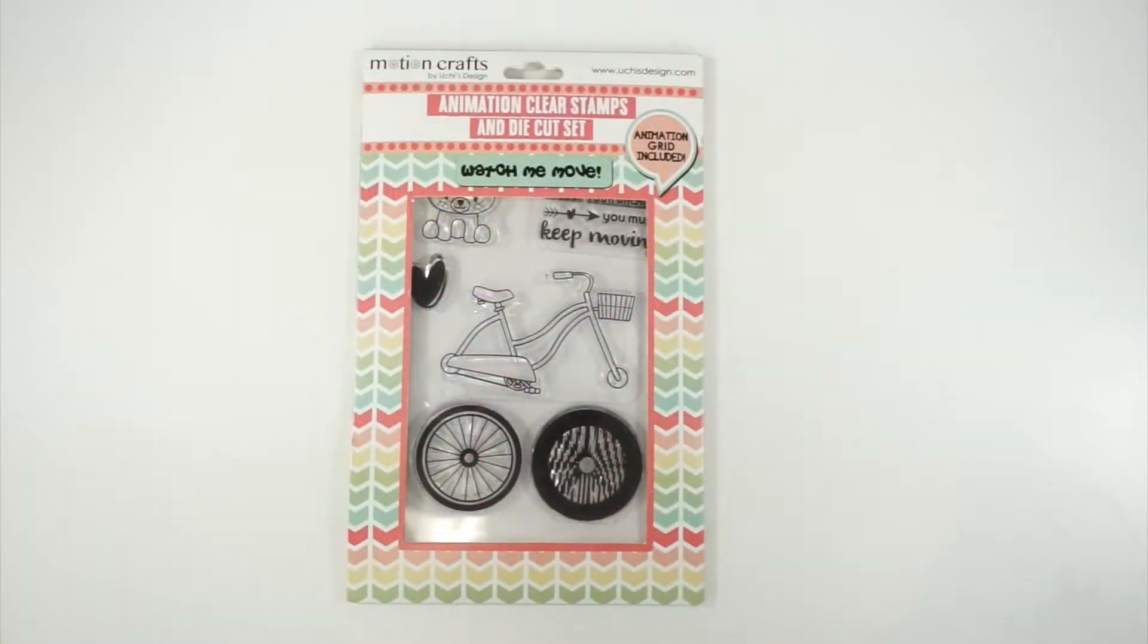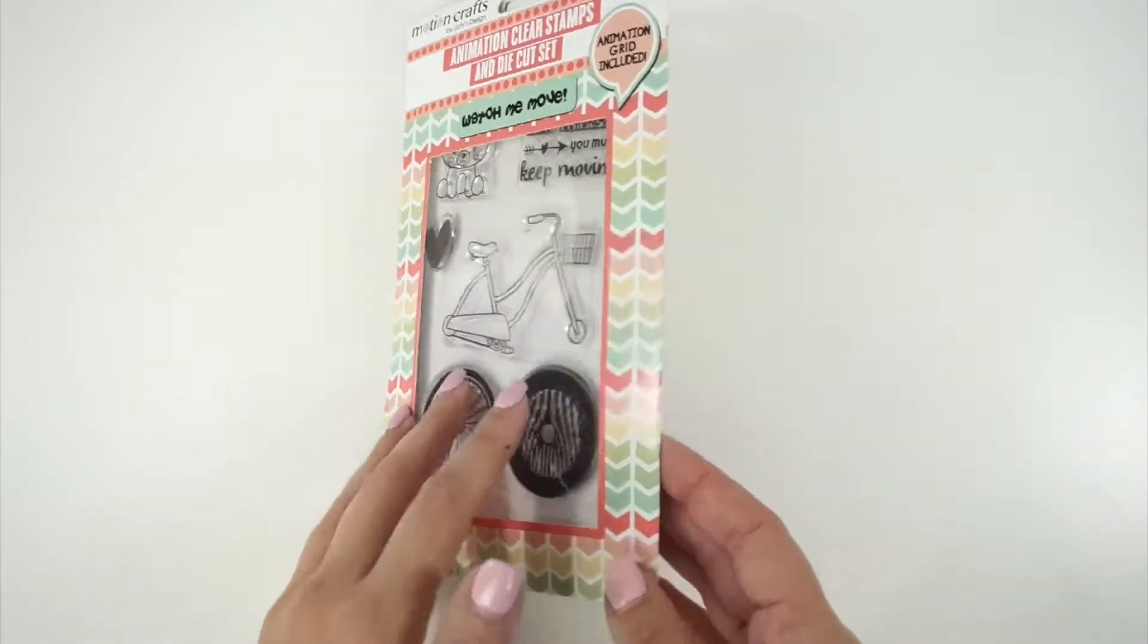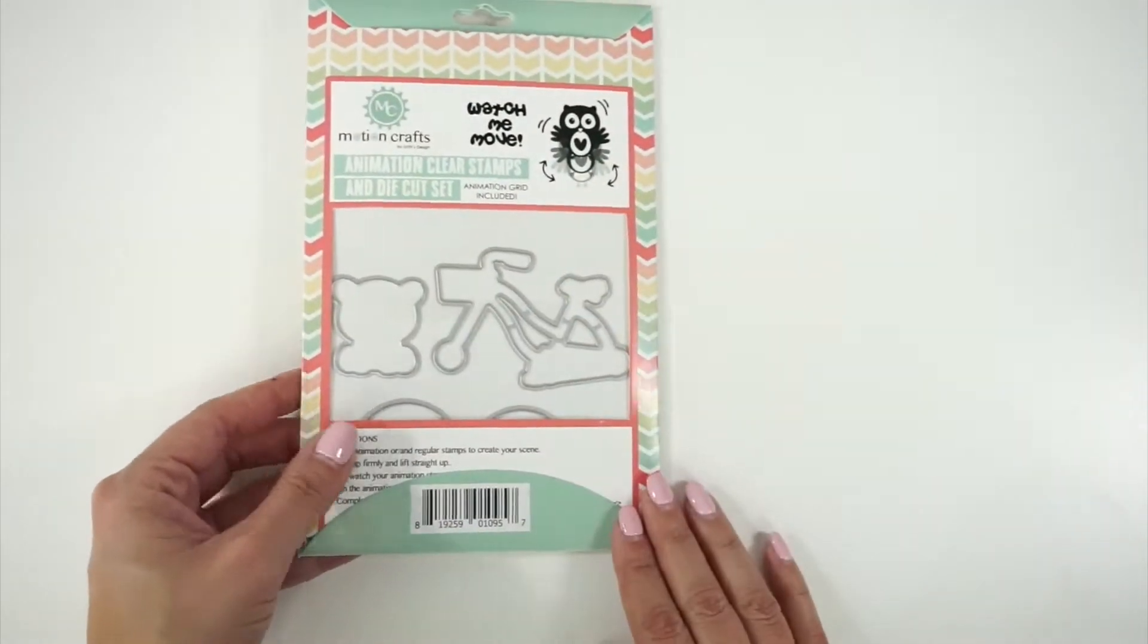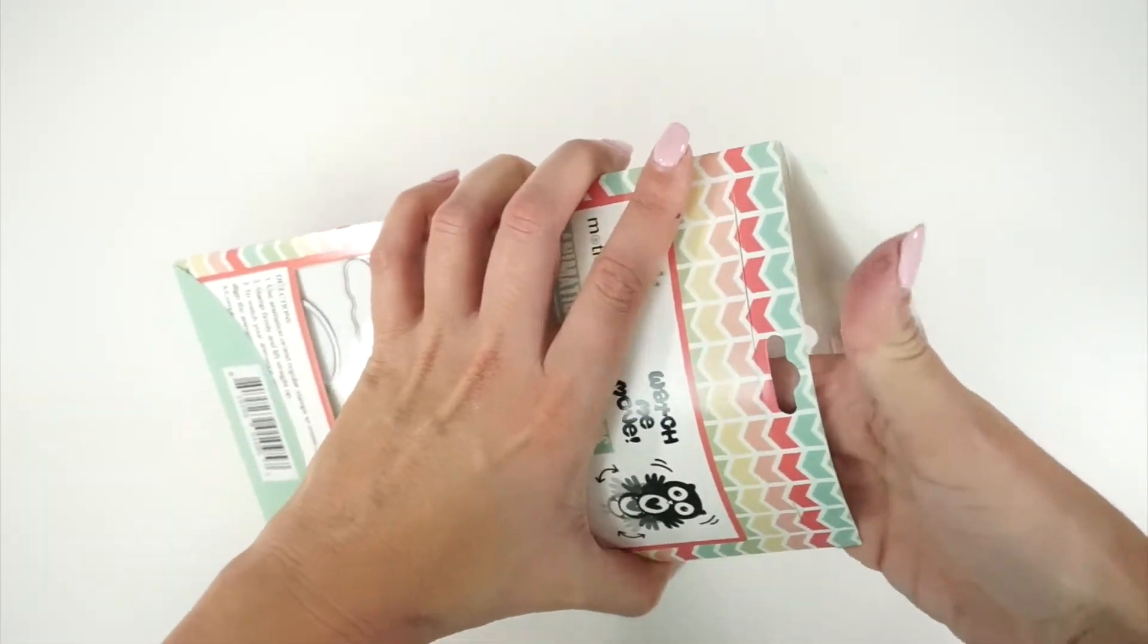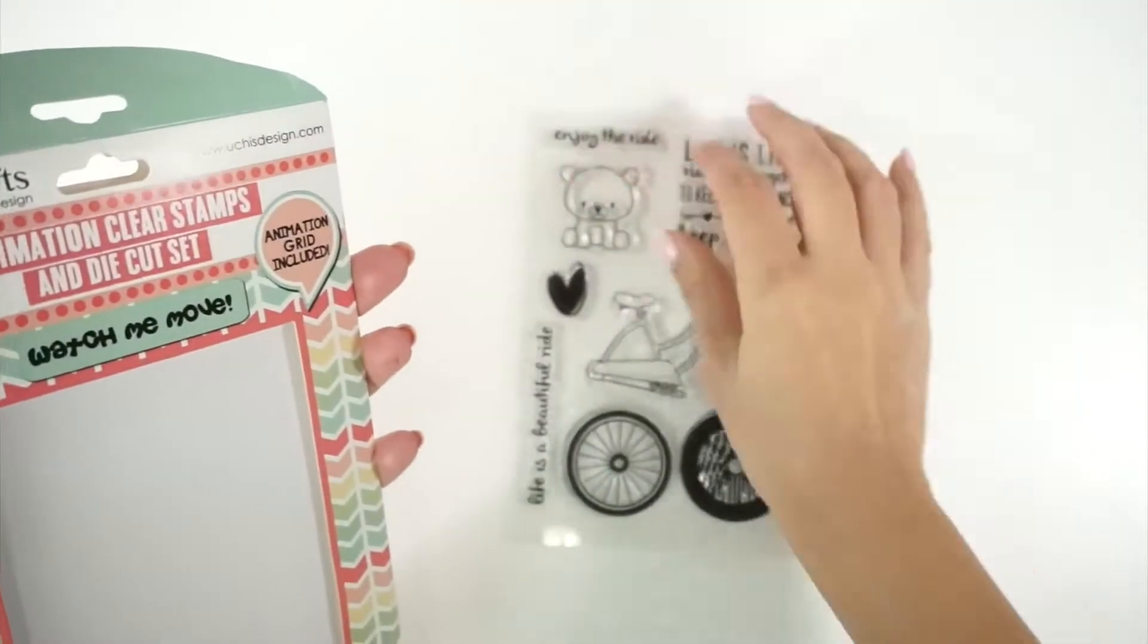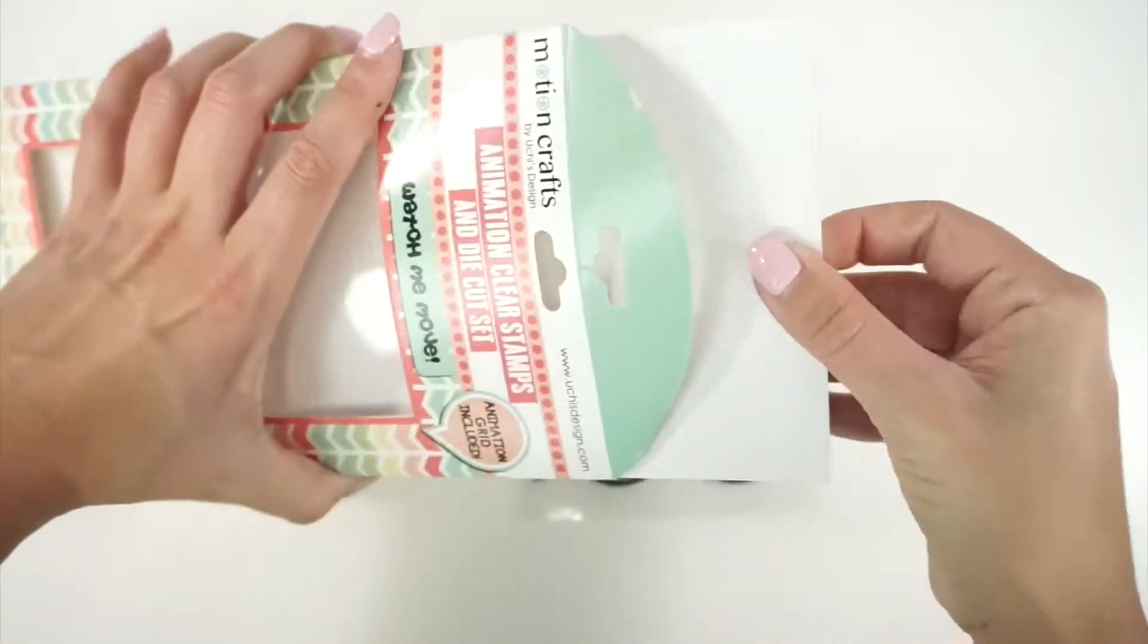This is so cute, you can see how the teddy is riding the bicycle. What we like about this set is that it comes with the die-cuts included. So you have the stamps, the animation grid and the die-cuts in the same set.